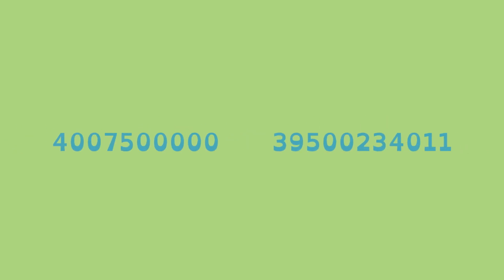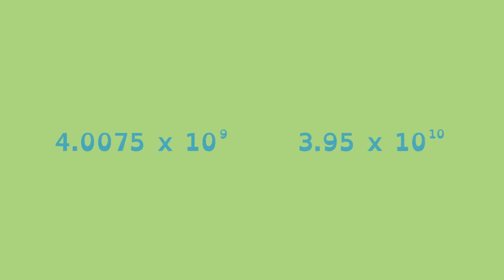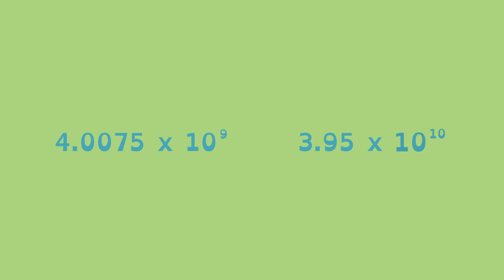At a glance, these two numbers look like they're almost the same. To know for sure, you can count the digits, or you can use scientific notation. We can see that the number on the right will be bigger since it is multiplied by 10 to the power of 10, whereas the number on the left is multiplied by 10 to the power of 9.